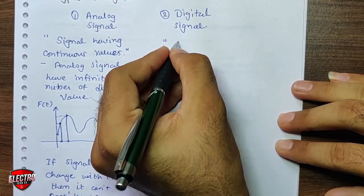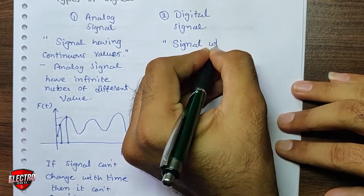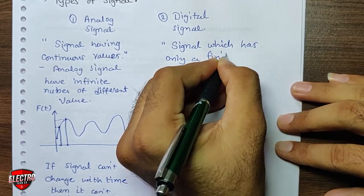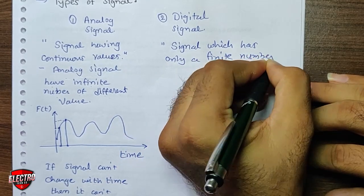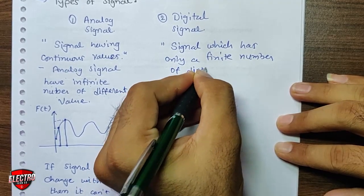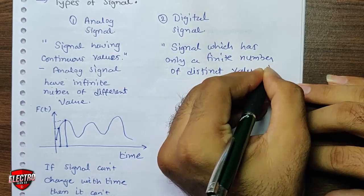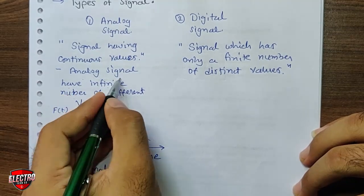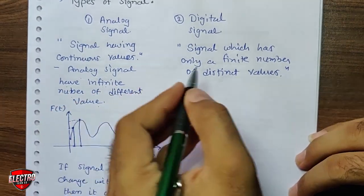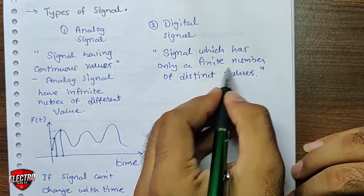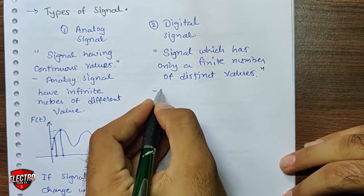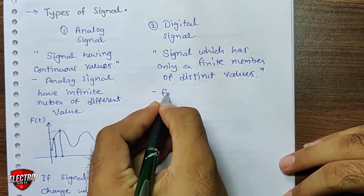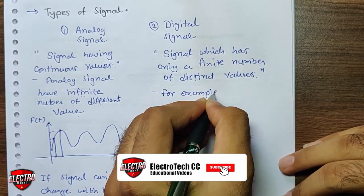The second type is the digital signal — a signal which has only a finite number of distinct values. In an analog signal there are continuous, infinite different values, whereas in a digital signal it has only a finite number of distinct values. That means digital signal values are not continuous.